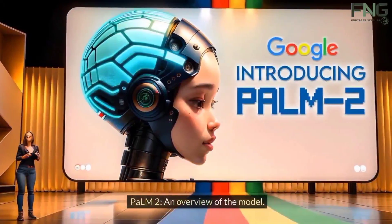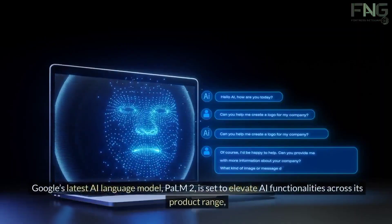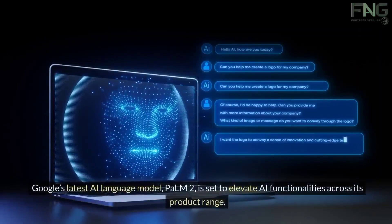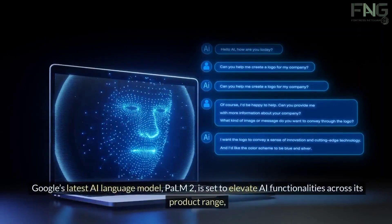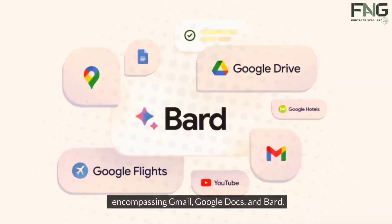Palm 2 – An Overview of the Model. Google's latest AI language model, Palm 2, is set to elevate AI functionalities across its product range, encompassing Gmail, Google Docs, and BARD.